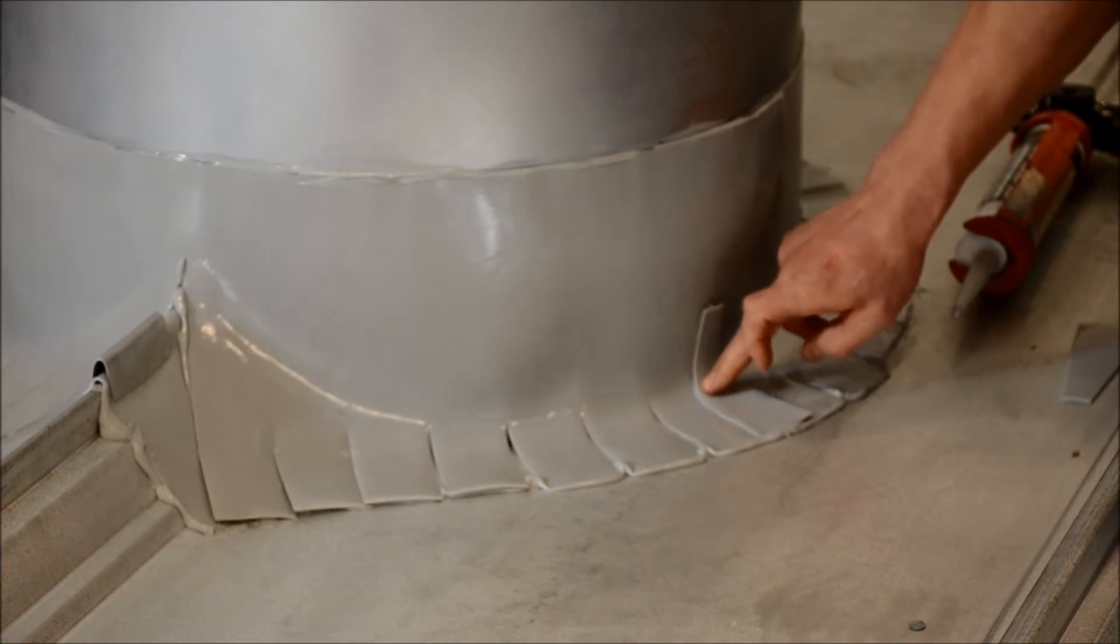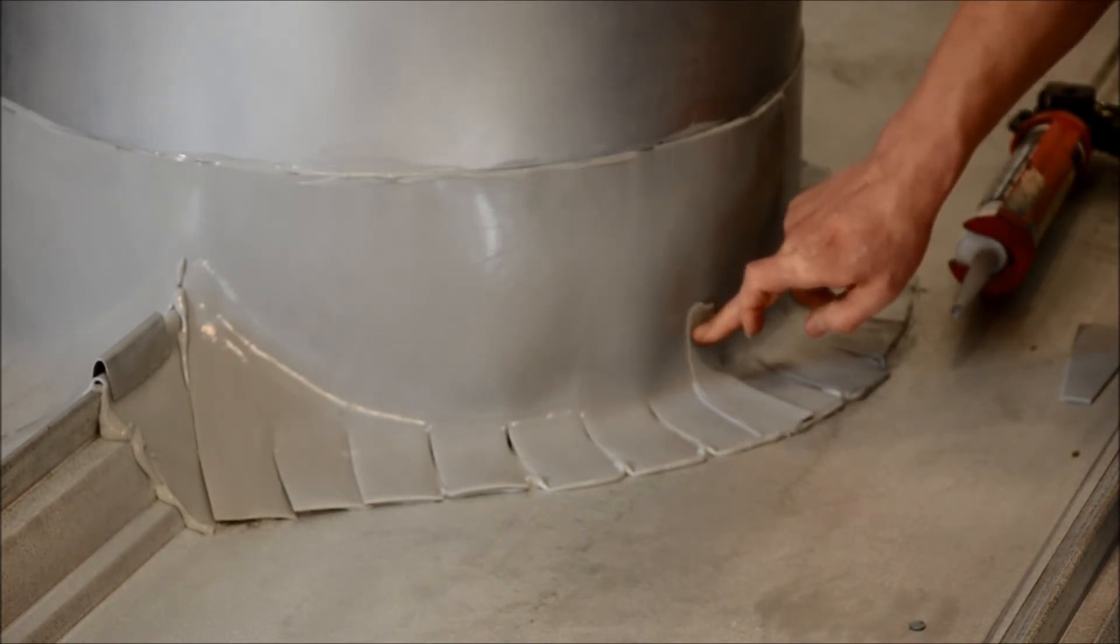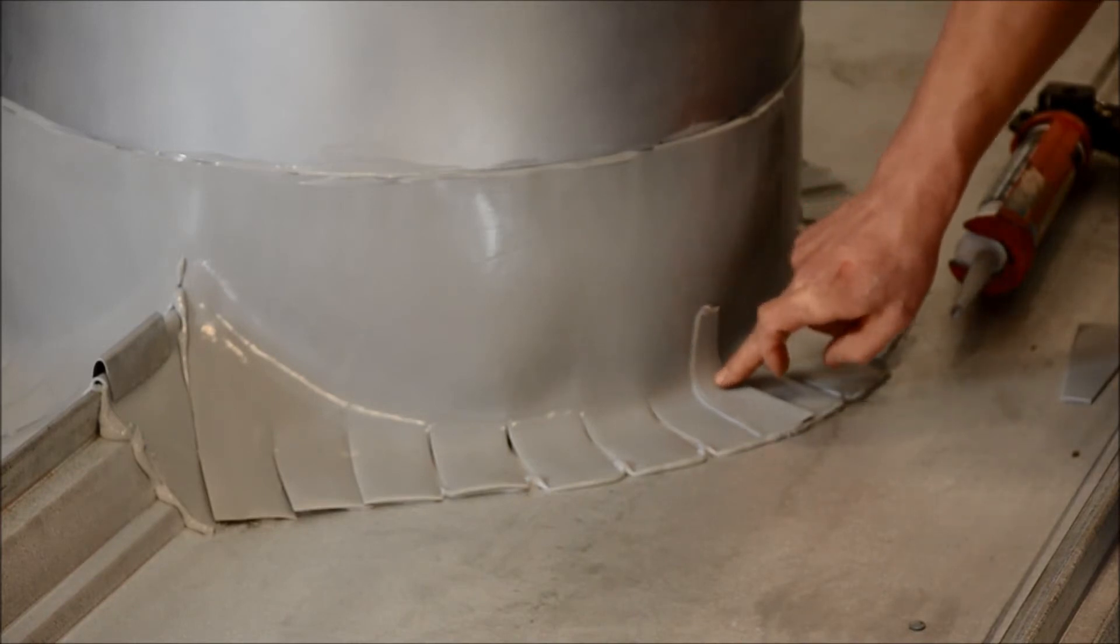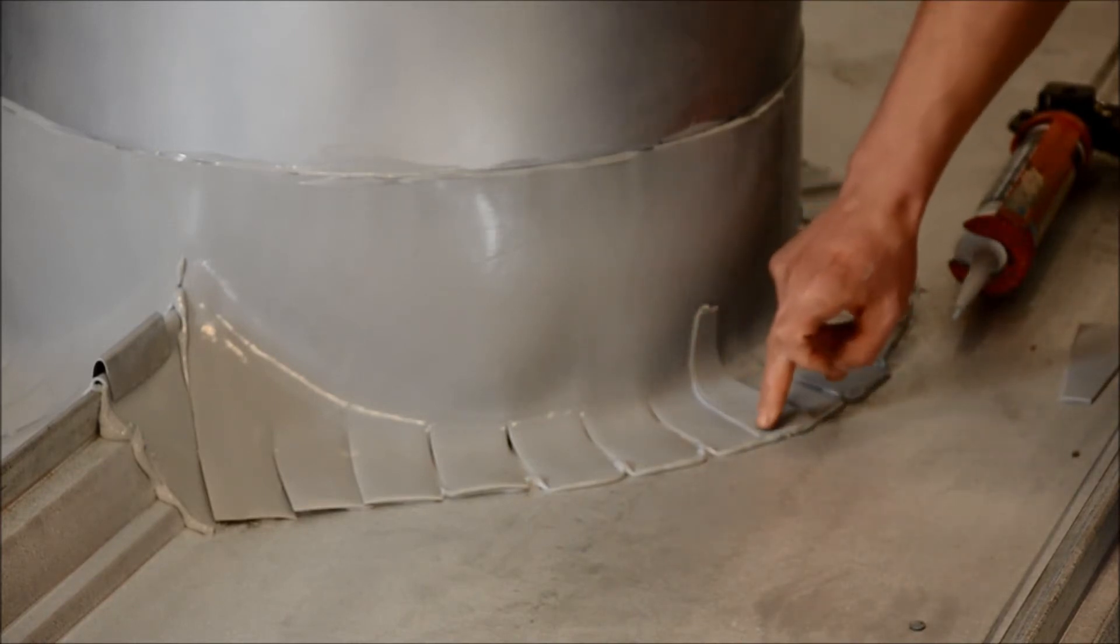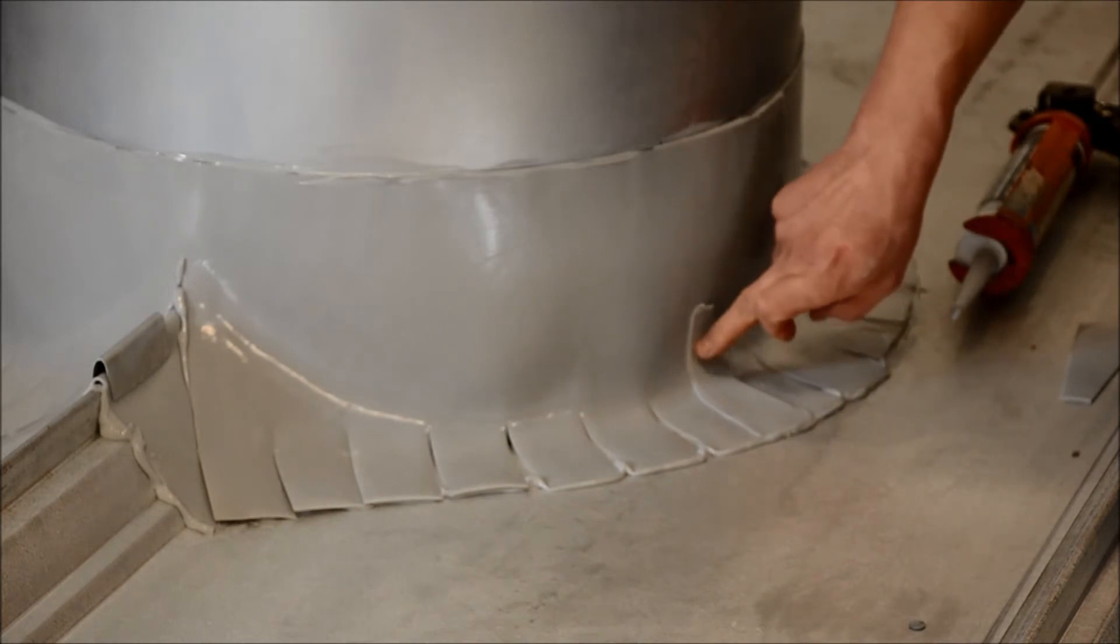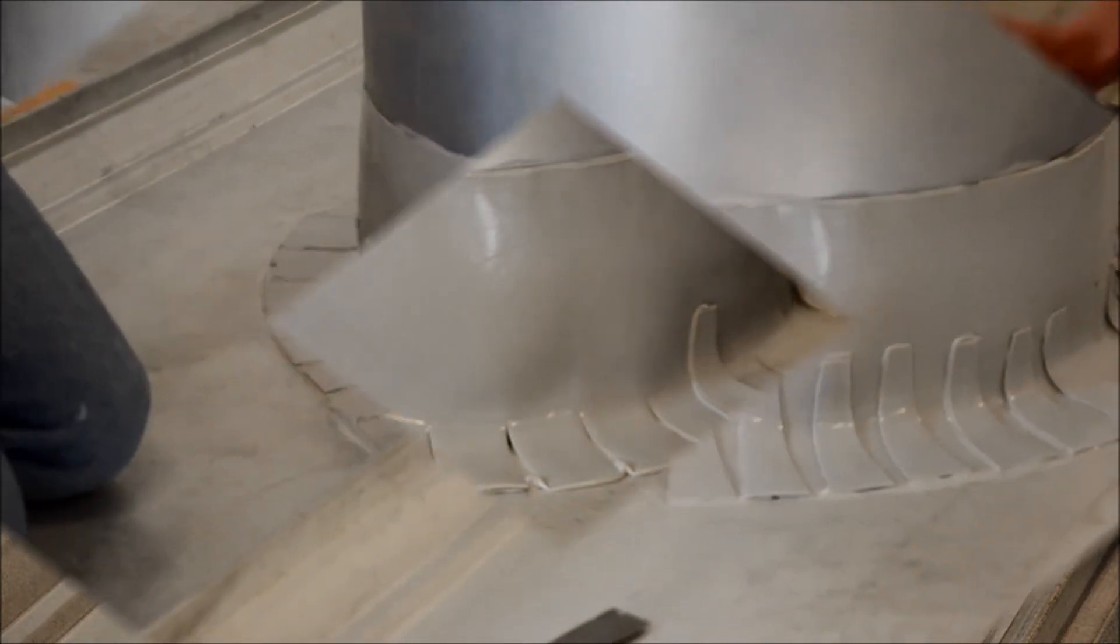Then I'm going to take this piece and I'm going to install it over top of our gap. Use the same process to go around the whole perimeter of our penetration. Now once this is pressed into place, we have a leak-free seal.